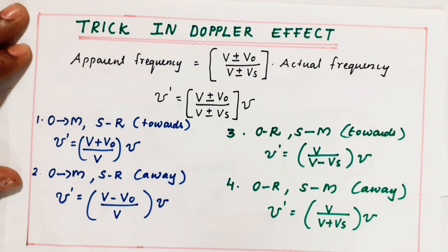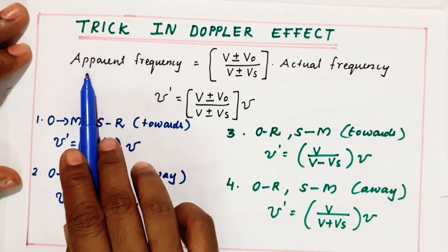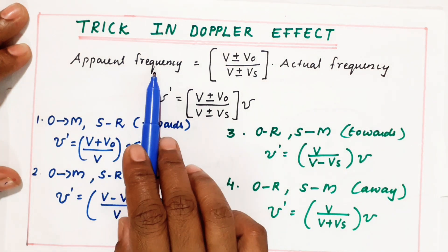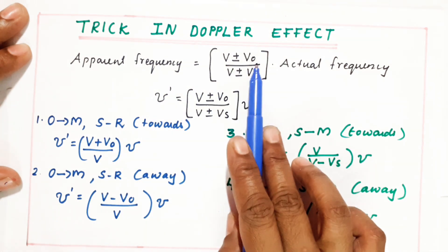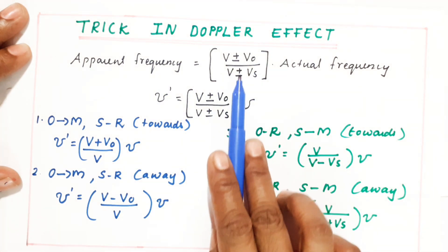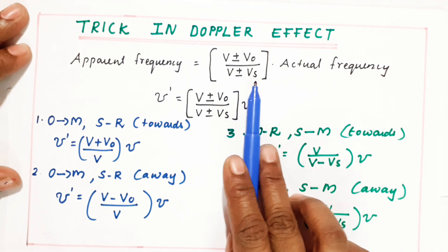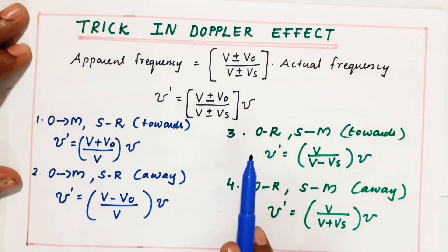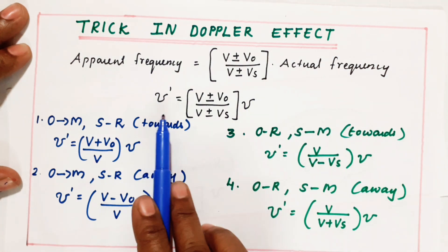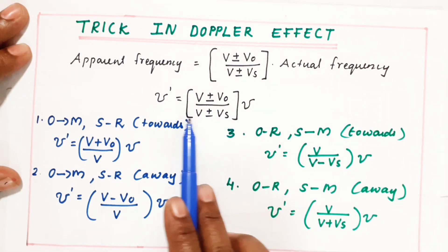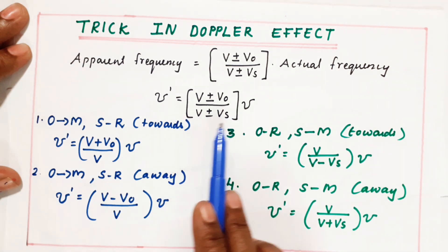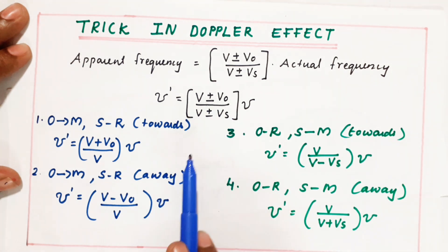I am going to give the trick to solve the Doppler effect. This is the equation: the apparent frequency nu dash equals V plus or minus V_O divided by V plus or minus V_S, into the actual frequency nu.